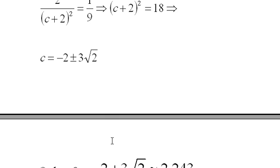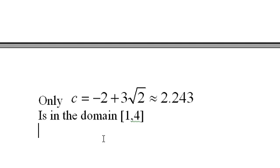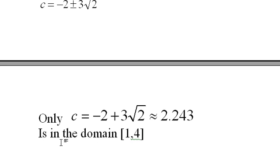So what I check—and you should check this too—is that only c = -2 + 3√2, which is approximately 2.243, is in the domain from 1 to 4.